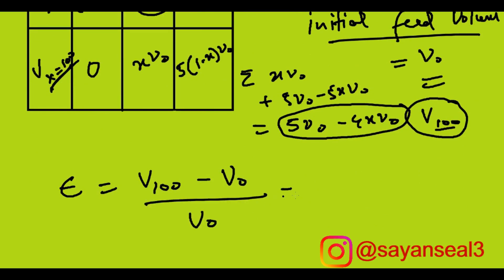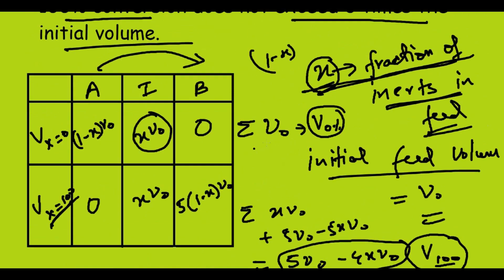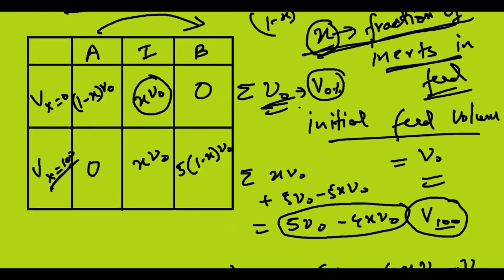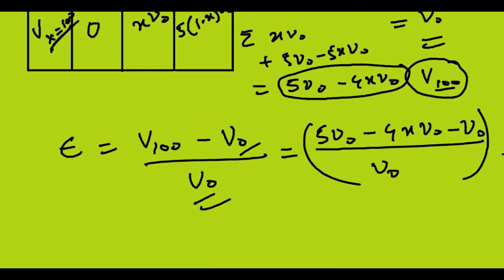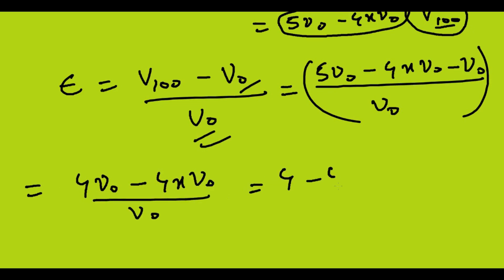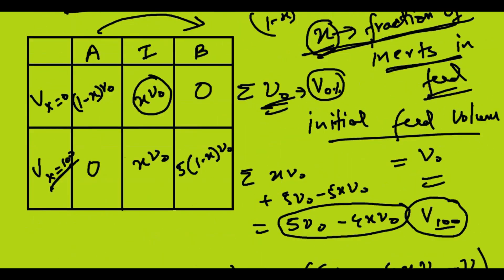Using the definition of epsilon: epsilon = (V at 100% - V at 0%) / V at 0% = (5V₀ - 4xV₀ - V₀) / V₀ = (4V₀ - 4xV₀) / V₀, which simplifies to 4 - 4x. So epsilon = 4 - 4x.